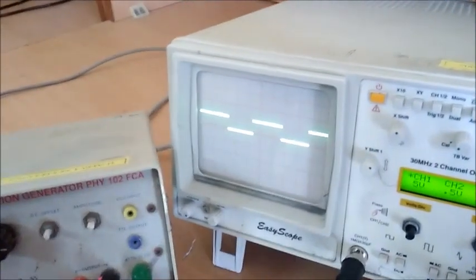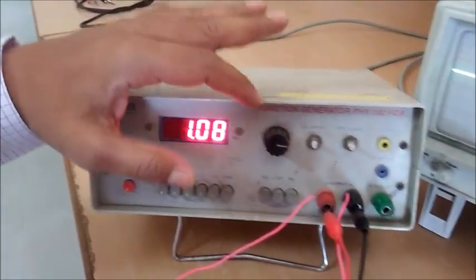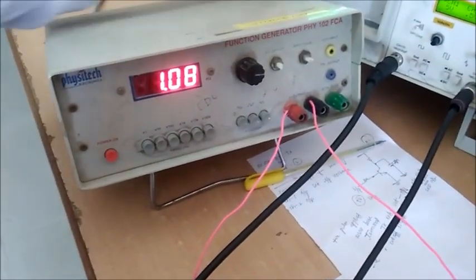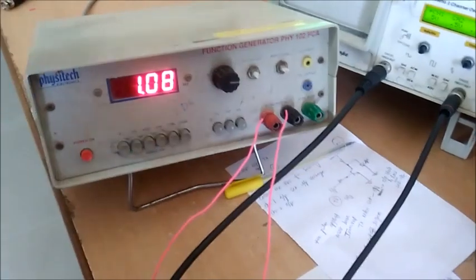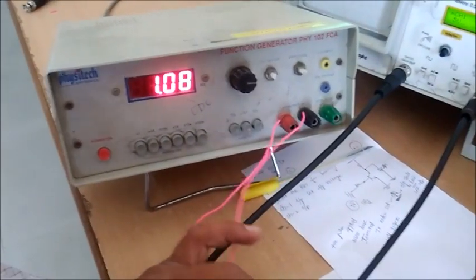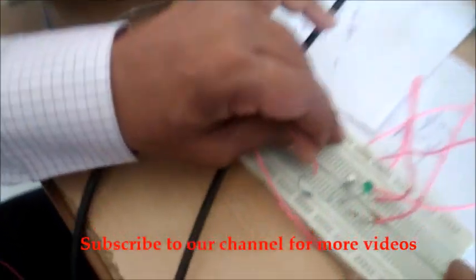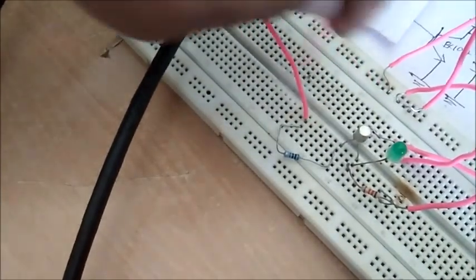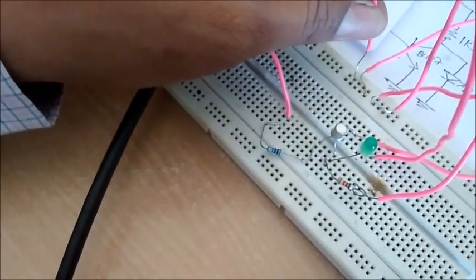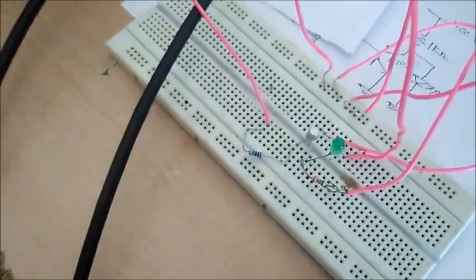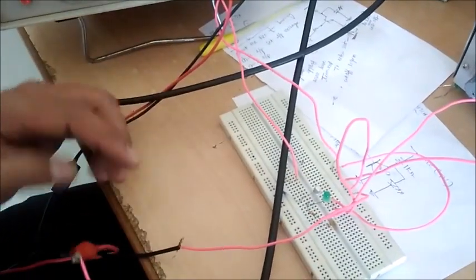Now set the input frequency to one kilohertz with five volts peak-to-peak. After setting the input frequency and voltage, connect the input to the circuit. To observe the output, connect the second probe to channel 2 and connect it across the collector.